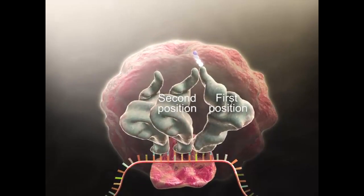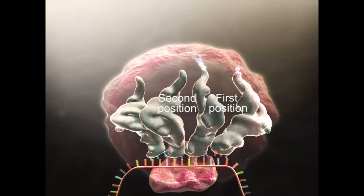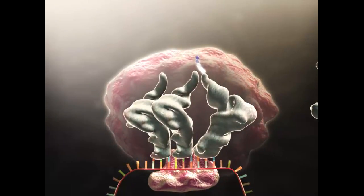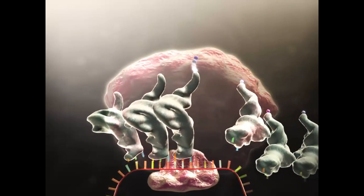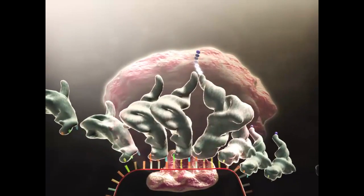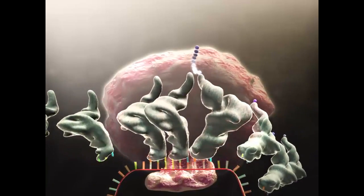Now, a new tRNA with the proper anticodon can come into the ribosome at the open position. This pattern continues as tRNA after tRNA bind to the mRNA codons and their amino acids are added to the growing protein chain.